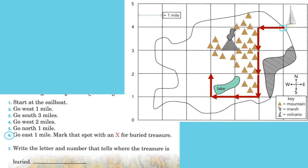Number six. Go east one mile. Mark the spot with an X for buried treasure. So east is going to be to the right. And then you're going to mark it with an X for the buried treasure.